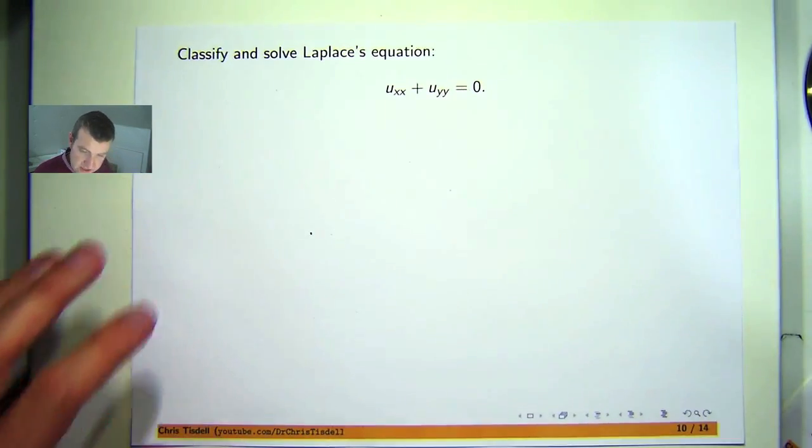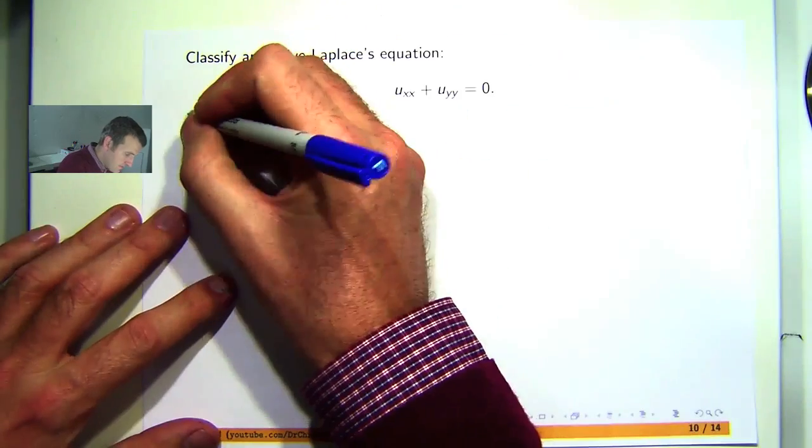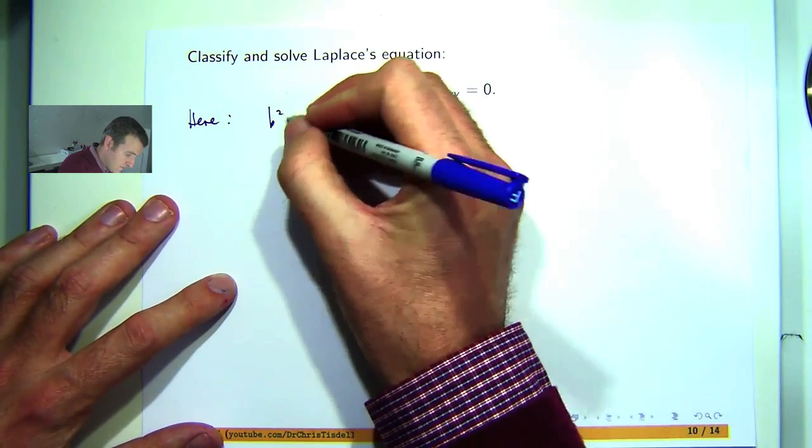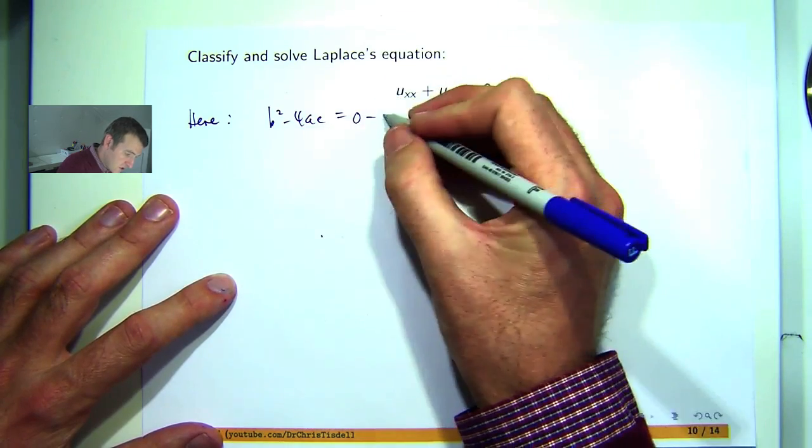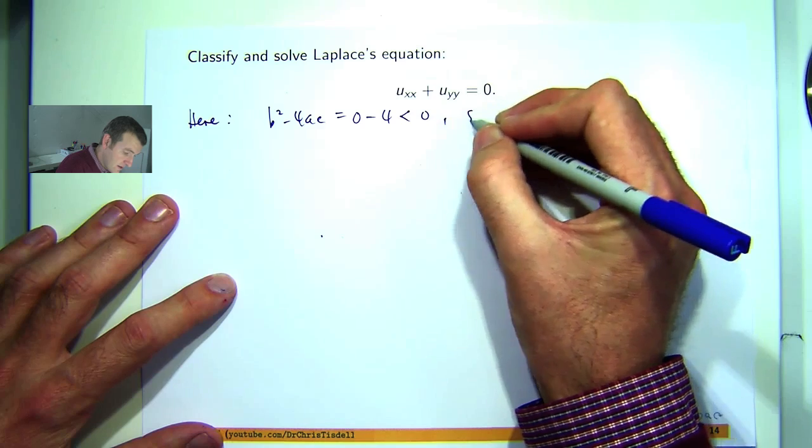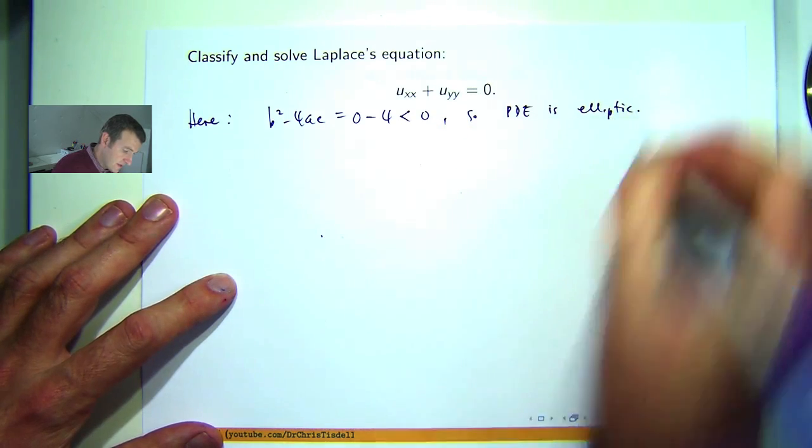Let's do another example. Here we've got Laplace's equation. We're asked to solve and classify it. So here, there's no, well, the mixed derivative term is 0. So b squared minus 4ac is going to be 0 minus 4 times 1 times 1, which is negative. So our PDE is elliptic.